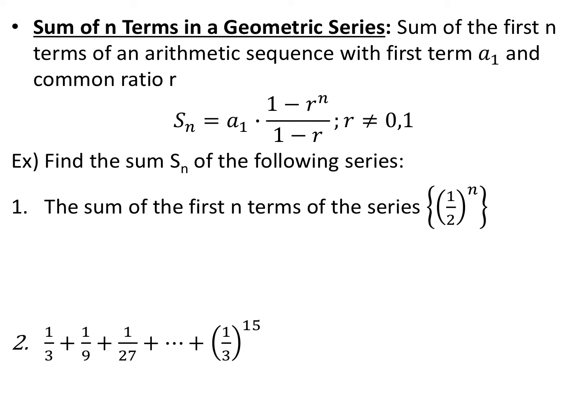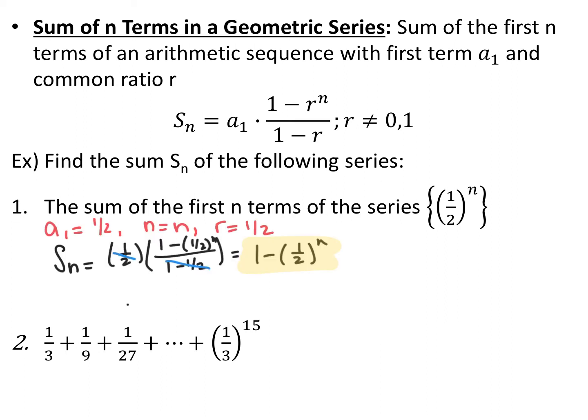The sum of n terms in a geometric sequence or geometric series: if we have a first term a₁ and a common ratio r, we can sum up the first n terms as a₁ times (1 minus r^n) over (1 minus r). Using that formula, for the series (1/2)^n — our first term is 1/2 and common ratio is 1/2. So the sum is (1/2)(1 − (1/2)^n) / (1/2), which simplifies to just 1 minus (1/2)^n as the general formula for summing the first n terms.